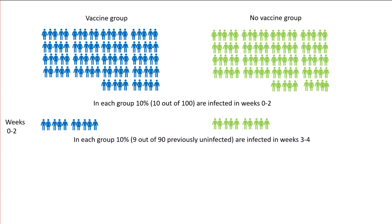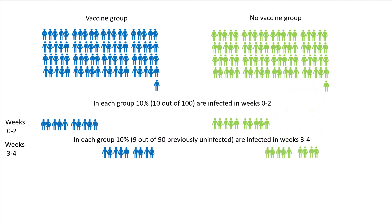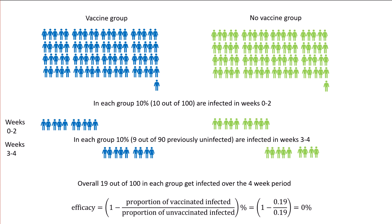In each group, ten percent — that's nine out of the 90 previously uninfected — are going to be infected in weeks three to four. So nine out of the remaining 90 in the vaccine group are going to get infected, and nine out of the remaining 90 in the no-vaccine group are going to get infected. Overall, 19 out of 100 in each group get infected over the four-week period, and efficacy — defined as one minus the proportion of vaccinated infected over the proportion of unvaccinated infected, as a percentage — is just zero percent.